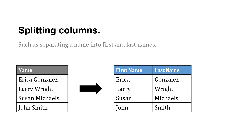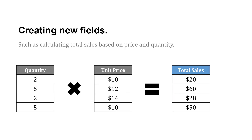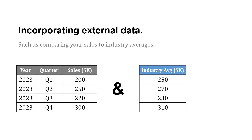We can also use data transformation as one of our data quality techniques. So we might do things like split columns where it makes sense, like a name into a first and last. Or creating new fields, like calculating total sales based on price and quantity. Or incorporating external data, like comparing our sales to industry averages. We use transformation as part of our quality process.